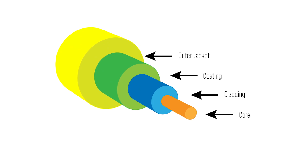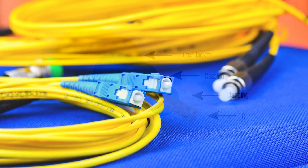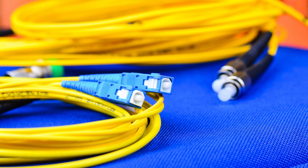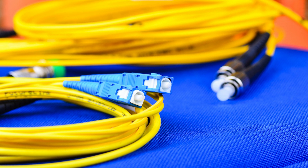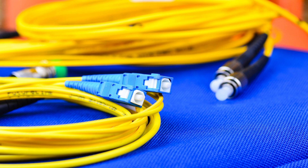Cladding, coating and Kevlar materials protect the core from damage. The whole thing is then wrapped in an outer jacket or sheath, which is the part you can see and touch.